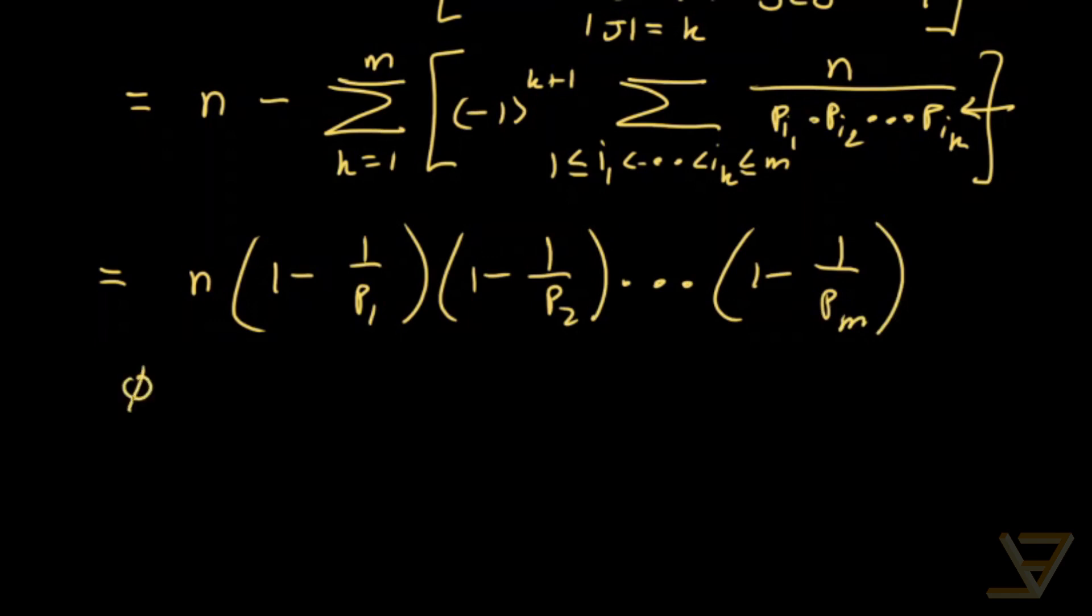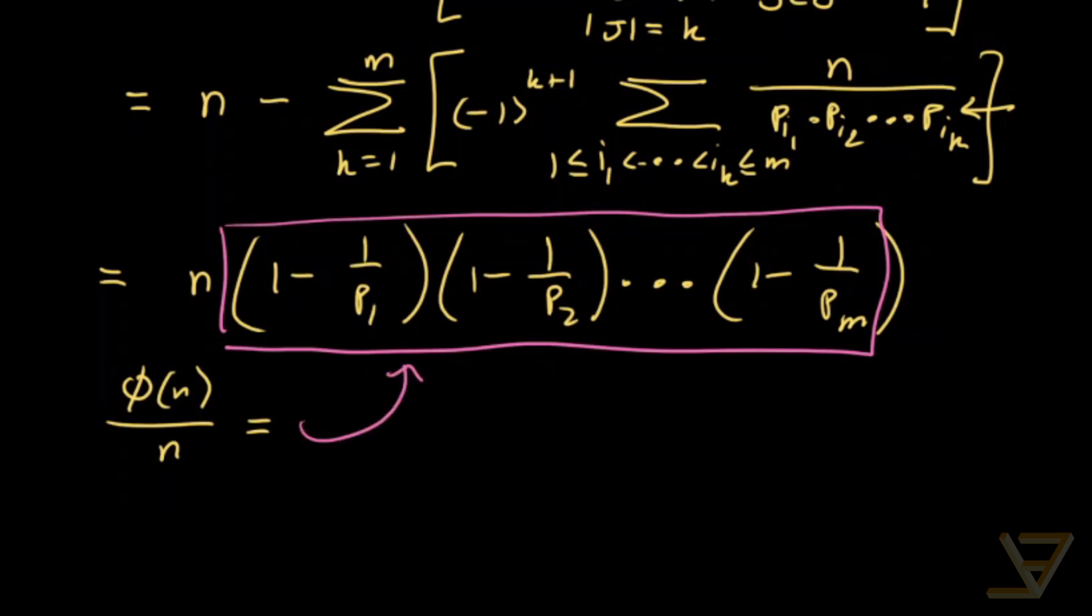So that tells us that phi of n over n is equal to this product here. So that is what we call Euler's phi or totient function.